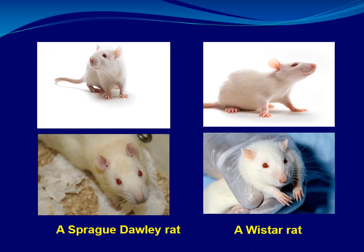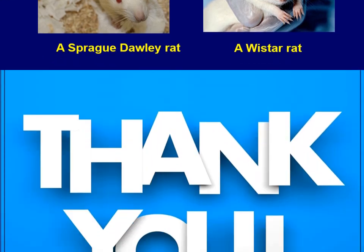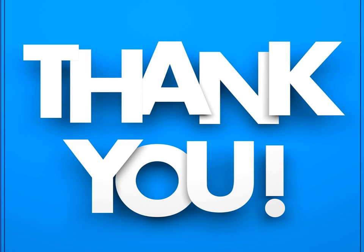Comparing a Wistar rat and a Sprague-Dawley rat: they look the same — there is no apparent morphological difference — but they may differ physiologically. For example, pharmacological effects or drug responses may differ between the two strains due to them being physiologically different. Good luck and thank you.